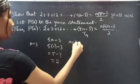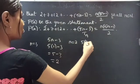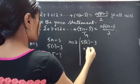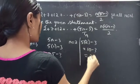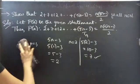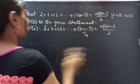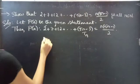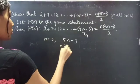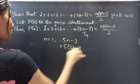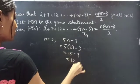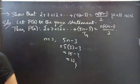When n equals 2, 5 times 2 minus 3 equals 7, which is our second term. Likewise, when n equals 3, 5n minus 3 equals 5 times 3 minus 3, which is 15 minus 3, equal to 12 — that is the third term.